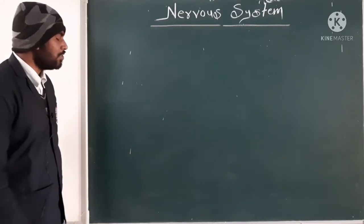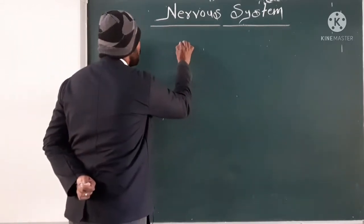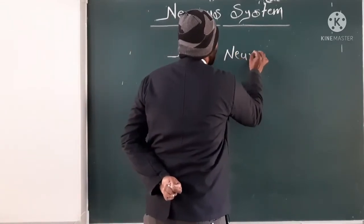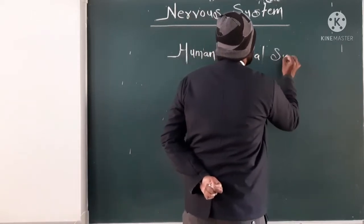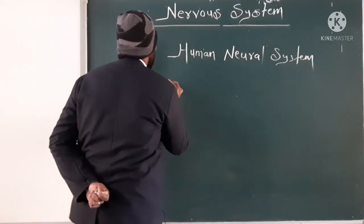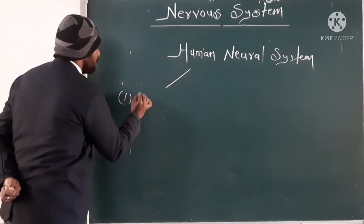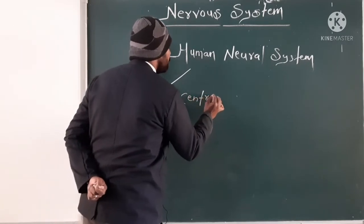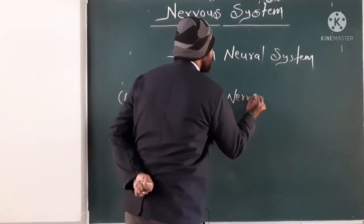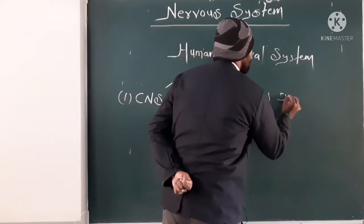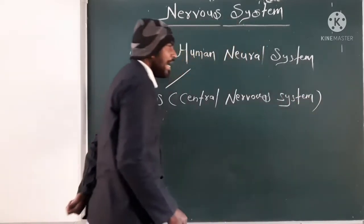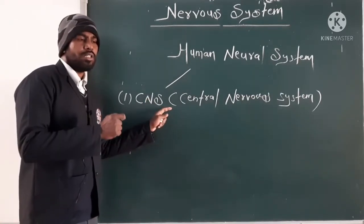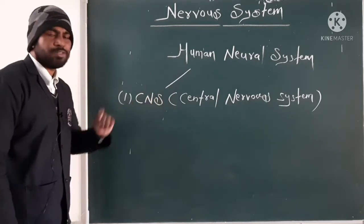Today we are going to study about the nervous system. Generally, when we talk about the human neural system, we can differentiate it into three parts. Number one is called CNS, or central nervous system. The CNS is the part of the neural system that functions between the brain and spinal cord.